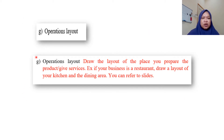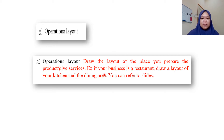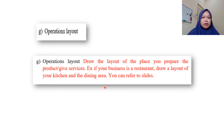Next is G: Operation Layout. Draw the layout of the place where you prepare the product and give the services. For example, if your business is a restaurant, draw the layout of your kitchen and also the dining area. You can also refer to the slide given.